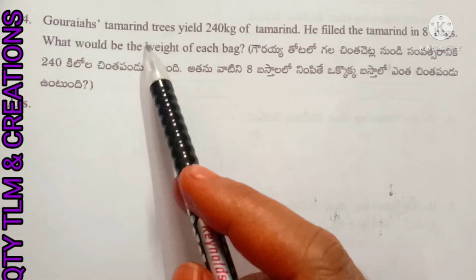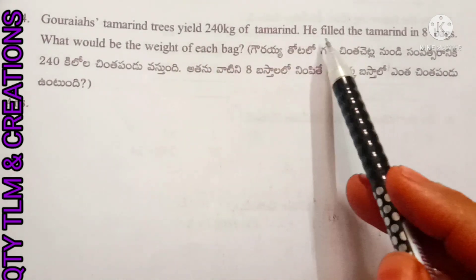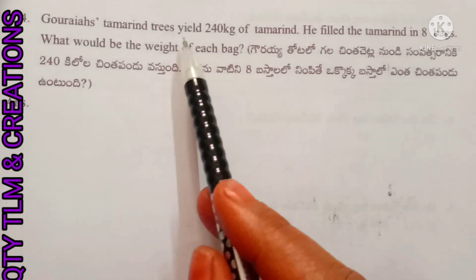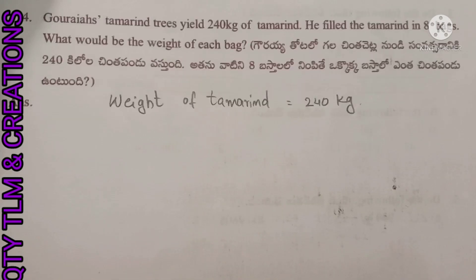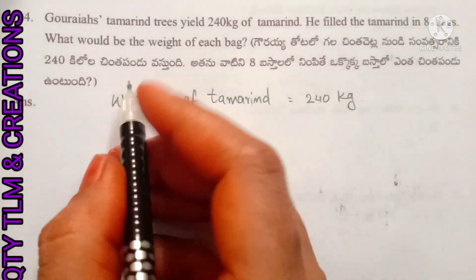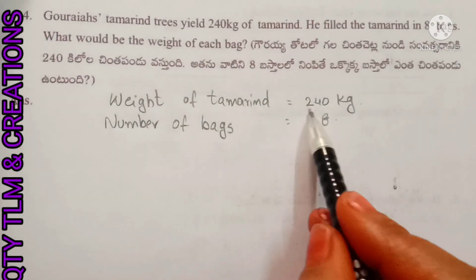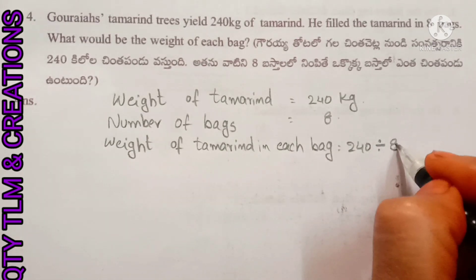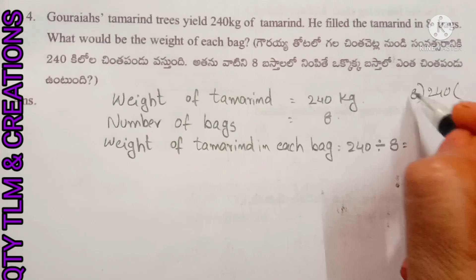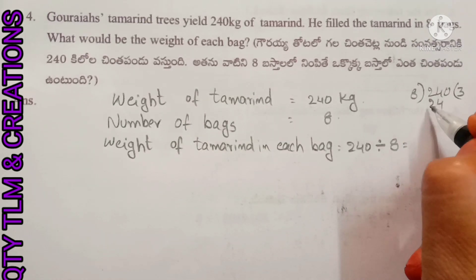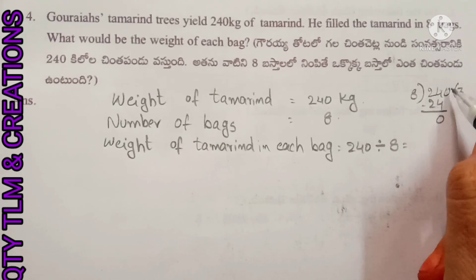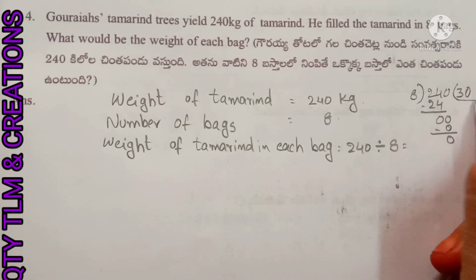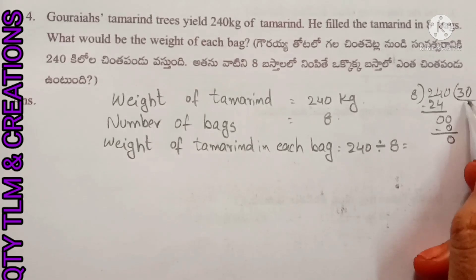Next question: Gauraya's tamarind trees yield 240 kilograms of tamarind. He filled the tamarind in 8 bags. What is the weight of each bag? Weight of tamarind: 240 kilograms; number of bags: 8. Weight of tamarind in each bag equals 240 ÷ 8. 8 goes into 24 three times; subtract, remainder 0. Bring down 0: 8 goes into 0 zero times. Quotient is 30. Weight of tamarind in each bag equals 30 kilograms.